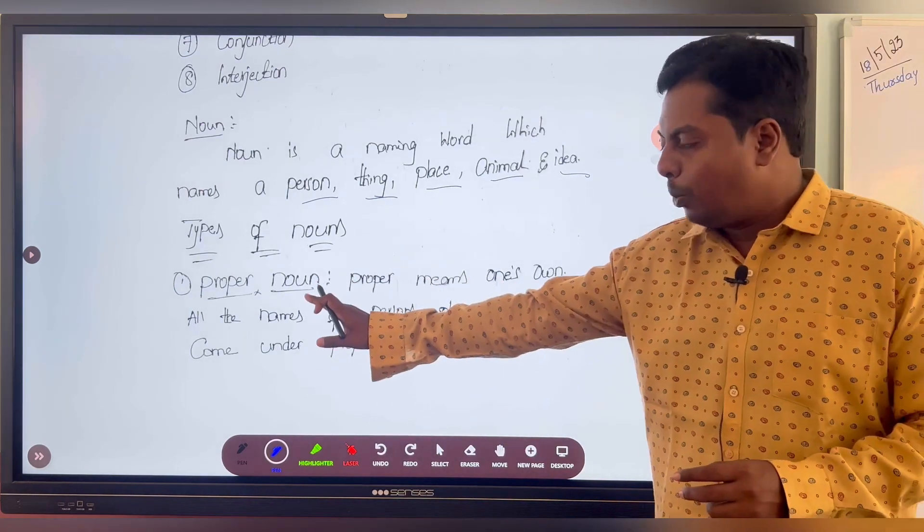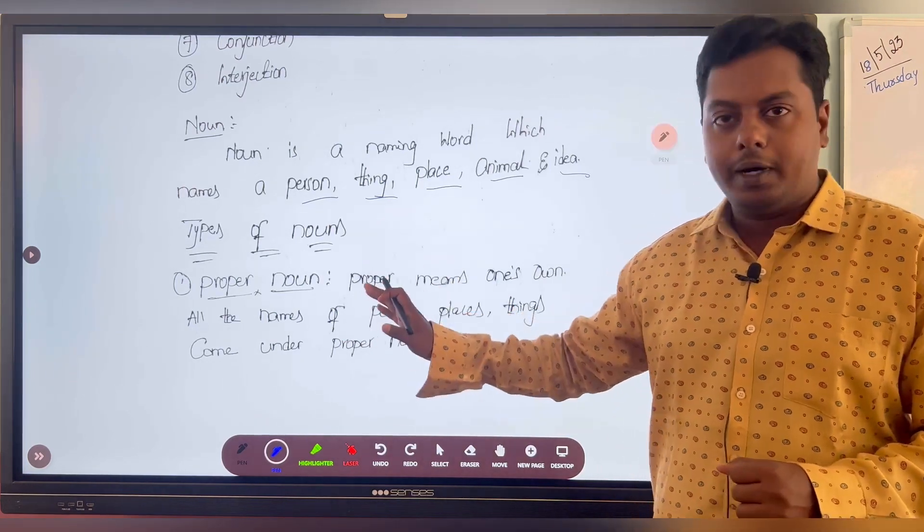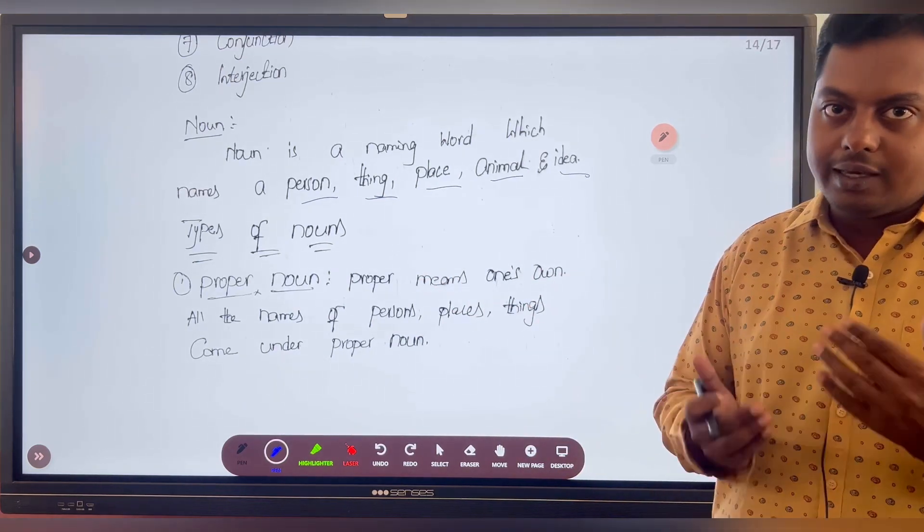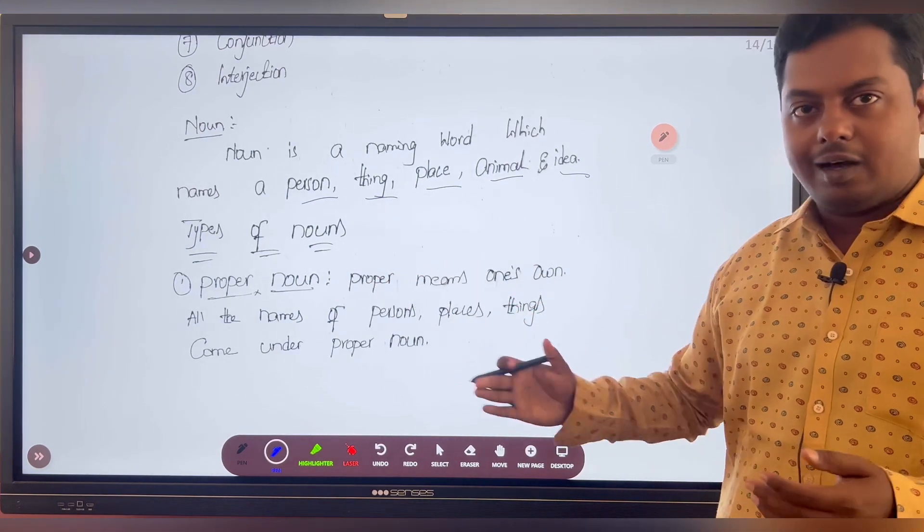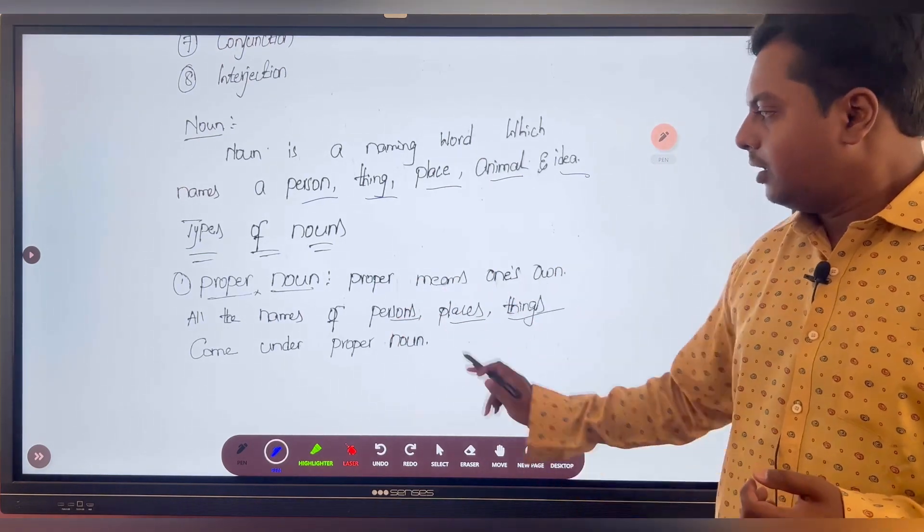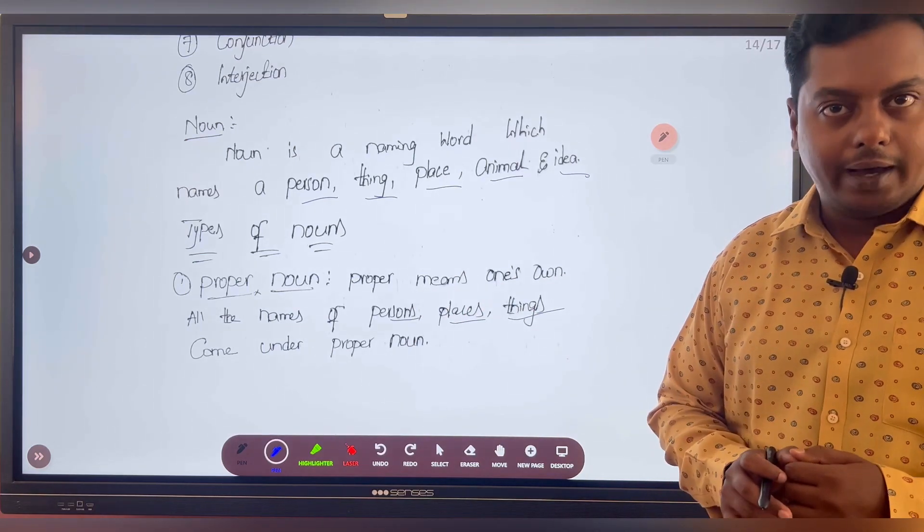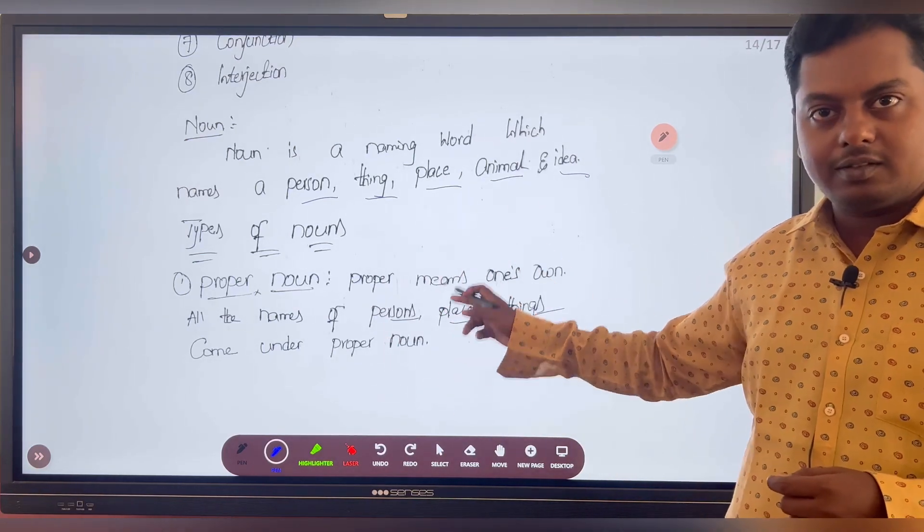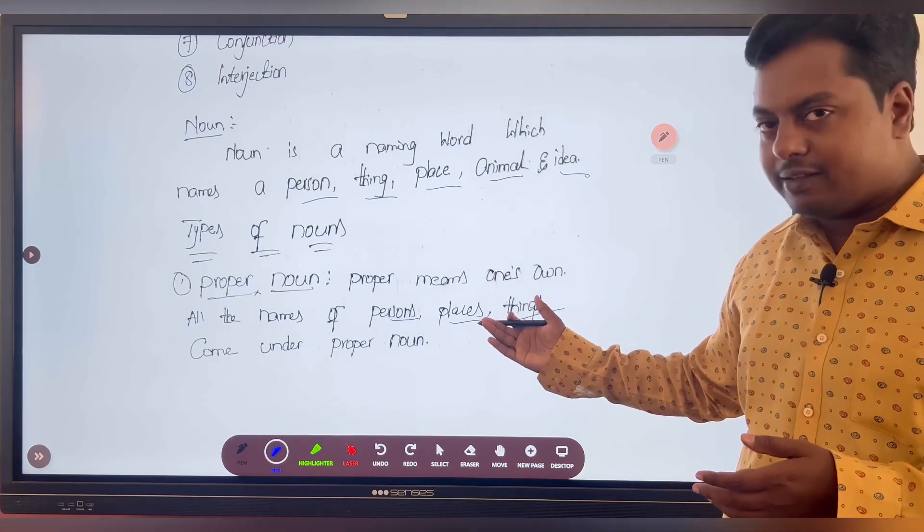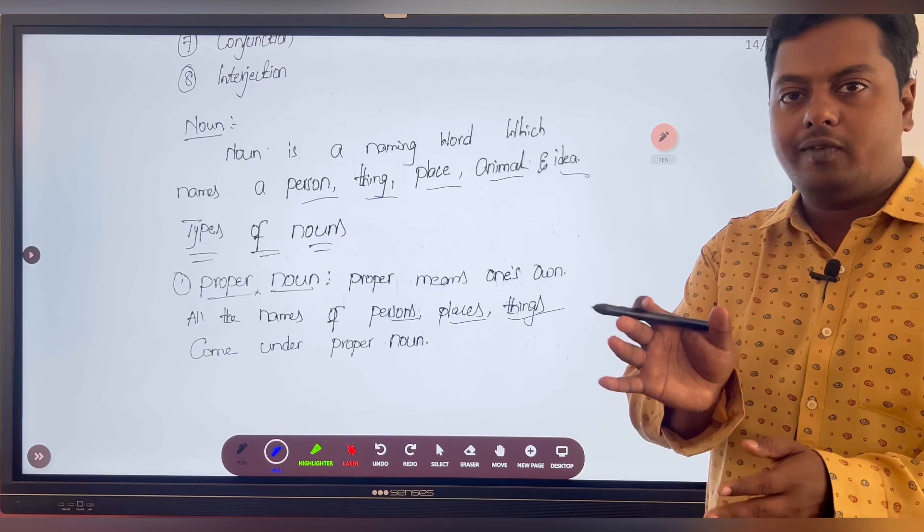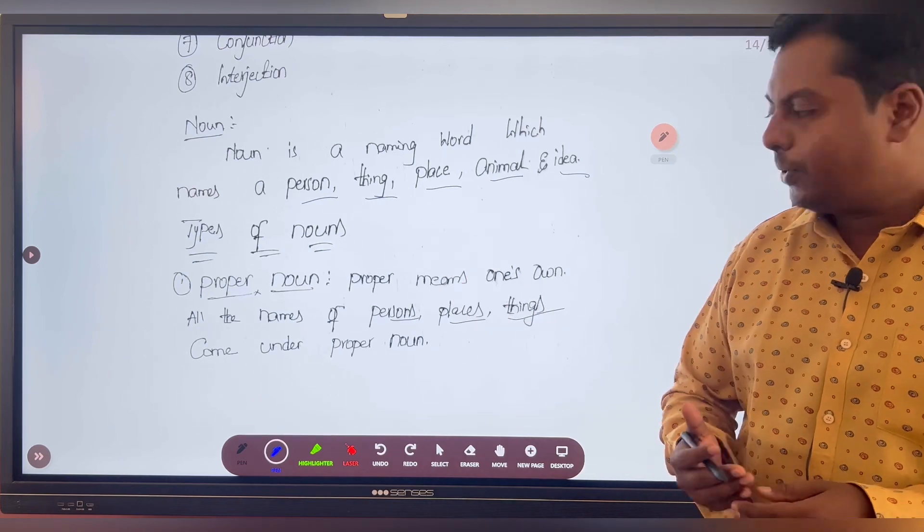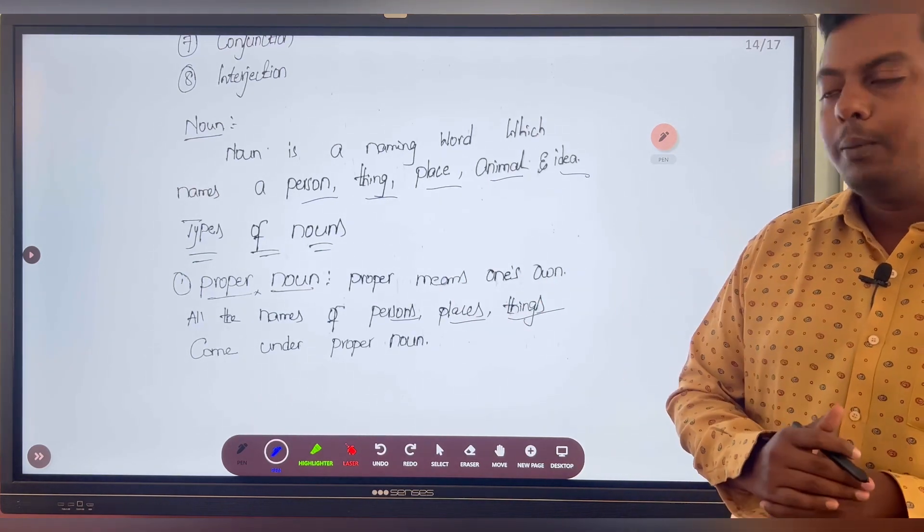We have different types of nouns. First type is proper noun. What is the meaning of proper? Proper means one's own. Our own thing is our proper. So all the names of persons—our name is our own thing. All the names of persons, places, and things come under proper noun. Because name is our own. Place is also own, which means Anandapur. We have only one Anandapur. We don't have different places with this name. So it is proper. In the same way, things of our own also come under proper noun.